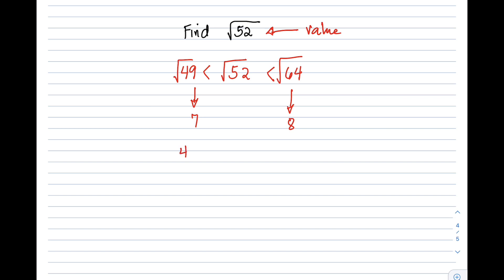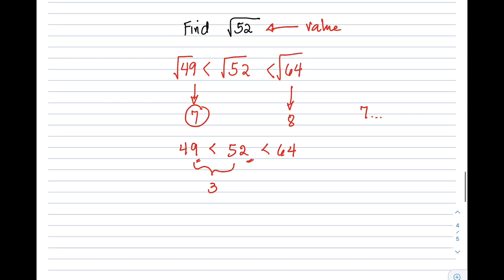Going back to our three numbers, we have 49, 52, and 64. Since we know that 52 is closer to 49, the value will be 7 point something. To find the decimal, you take the difference of 49 and 52, which is 3. Then the next step is to take the difference of 49 and 64, so 64 minus 49, that is 15.